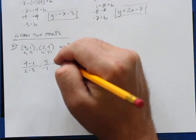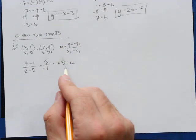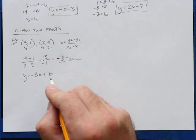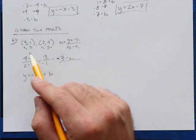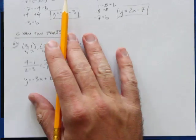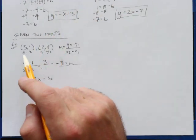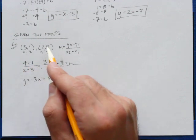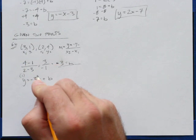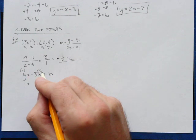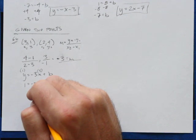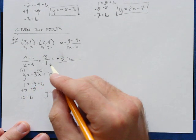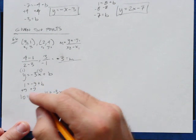Now I know what my slope is, so y equals negative 3x plus b — I'm almost there, I just need my y-intercept. I'm going to choose one of these points to plug in for x and y, just like I did in all of these examples. I'll use the point (3, 1) because it's got a 1 in it. So my y is 1 and my x is 3. Plugging in: 1 equals 3 times negative 3 is negative 9 plus b. Add 9 to both sides — 10 equals b. So I rewrite my whole equation: y equals negative 3x plus 10.